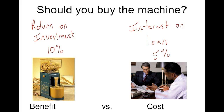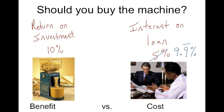They would borrow the money, purchase the machine, and that would increase the investment spending component of aggregate demand. Now, if the interest rate was 9% on the loan, the benefit still outweighs the cost, so by economic standards they should still borrow the money and purchase the machine. Even at 9.9 repeating percent — which equals 10% — they should do it. Businesses should purchase all capital for which the benefit is greater than or just equal to the cost.